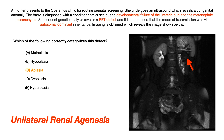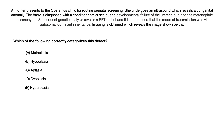The only answer that applies is aplasia, which is the complete failure of cell growth. But to develop high-yield patterns of thinking, ask yourself: even if I didn't know this was unilateral renal agenesis, what might a question have given me if they wanted me to pick A, B, D, or E? Let's reset this question and think about what pathologies they would have given us if they wanted us to pick the other answers.